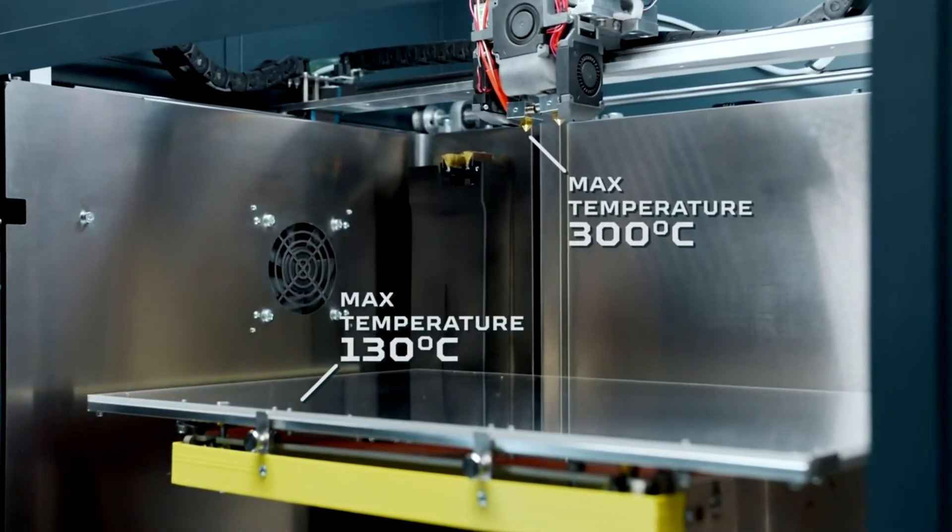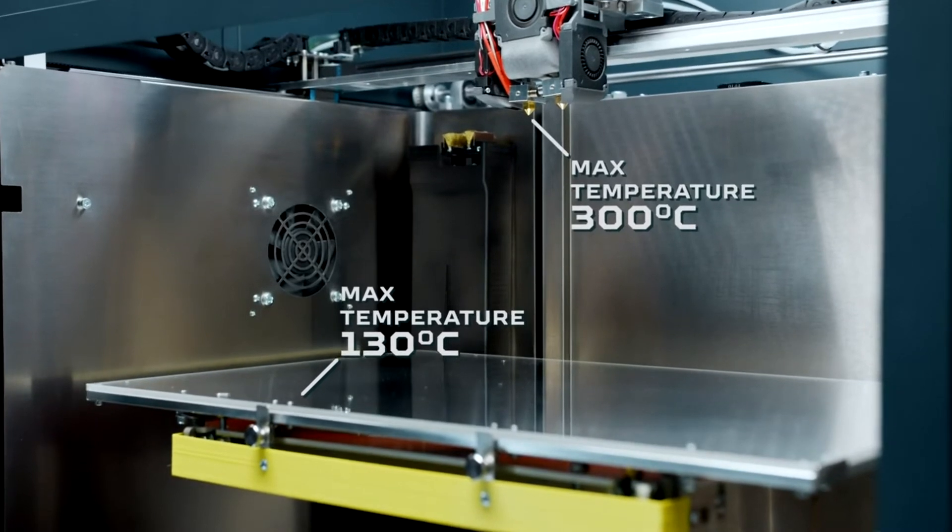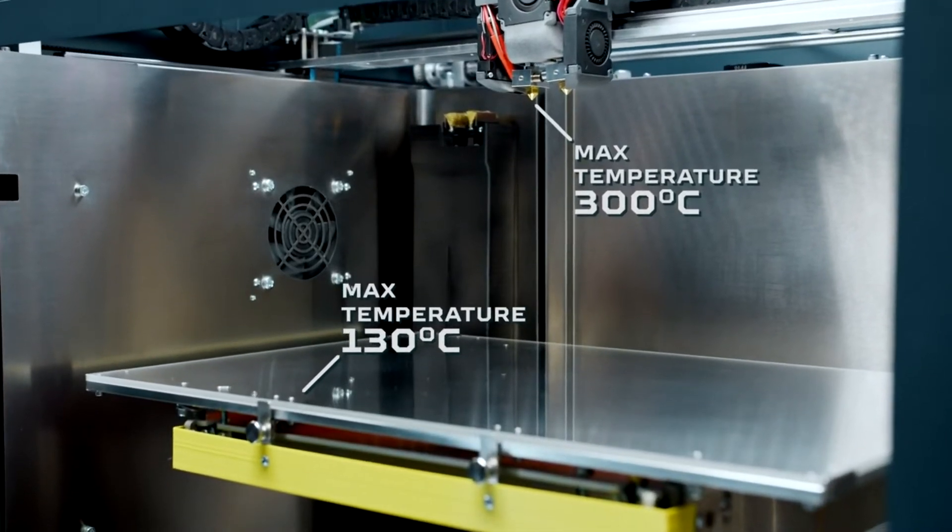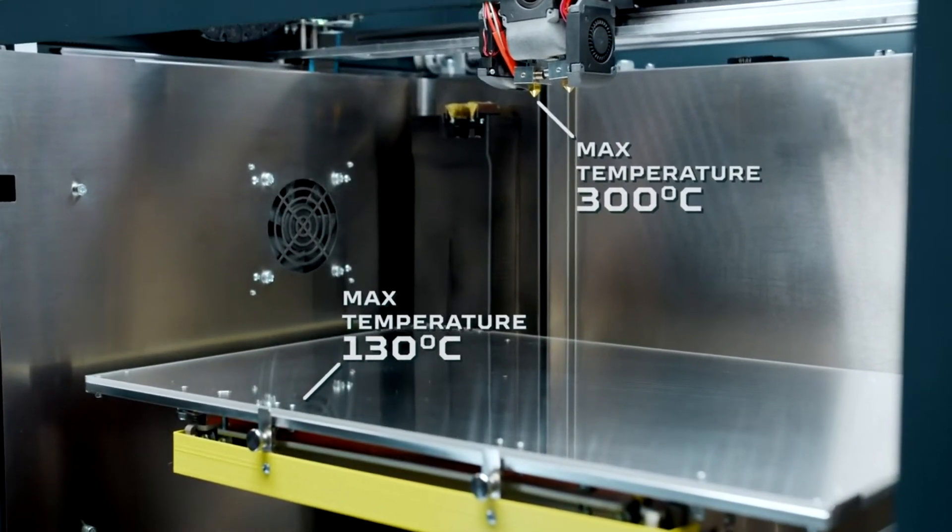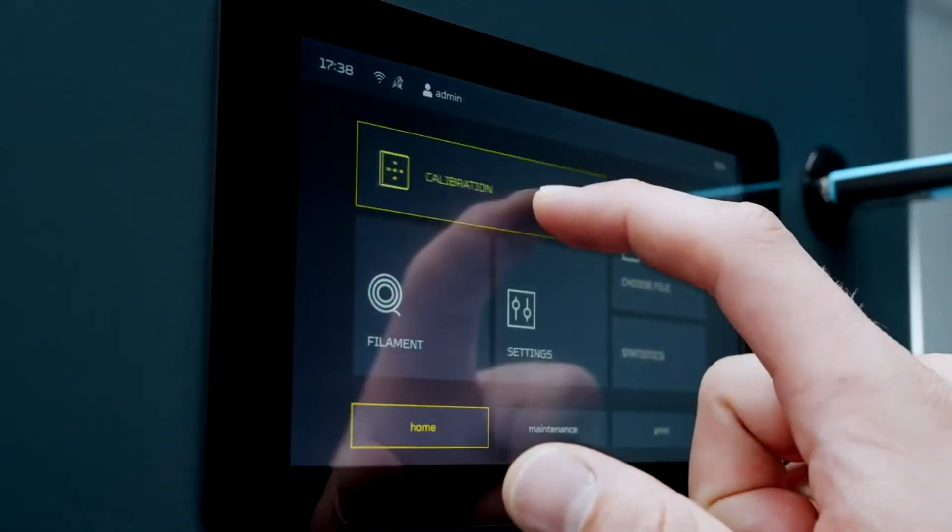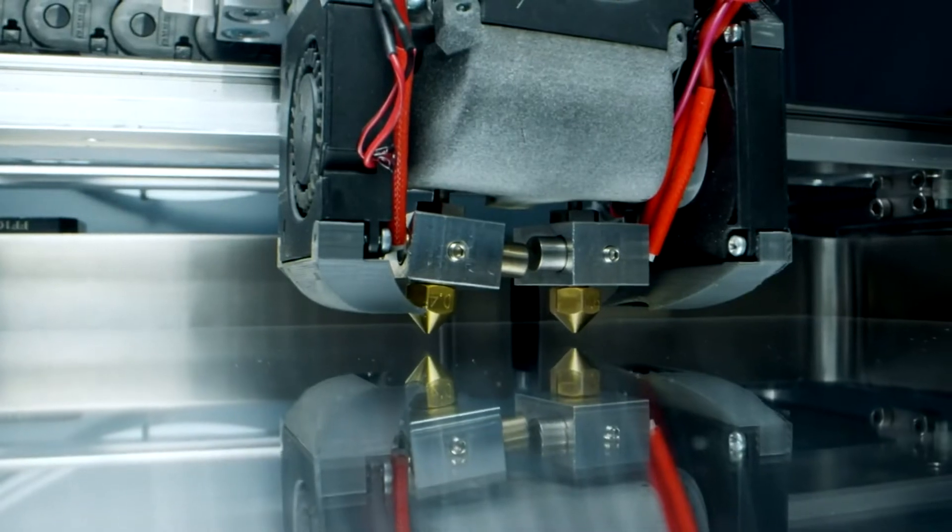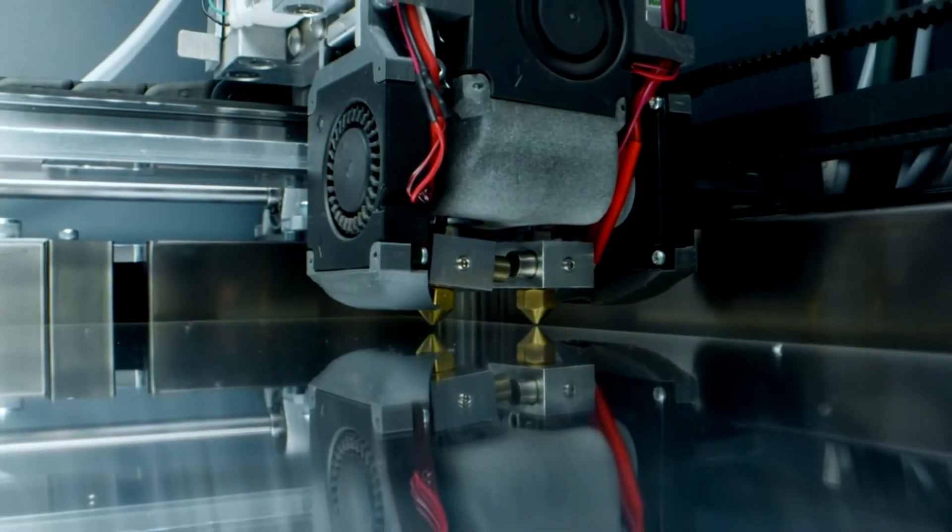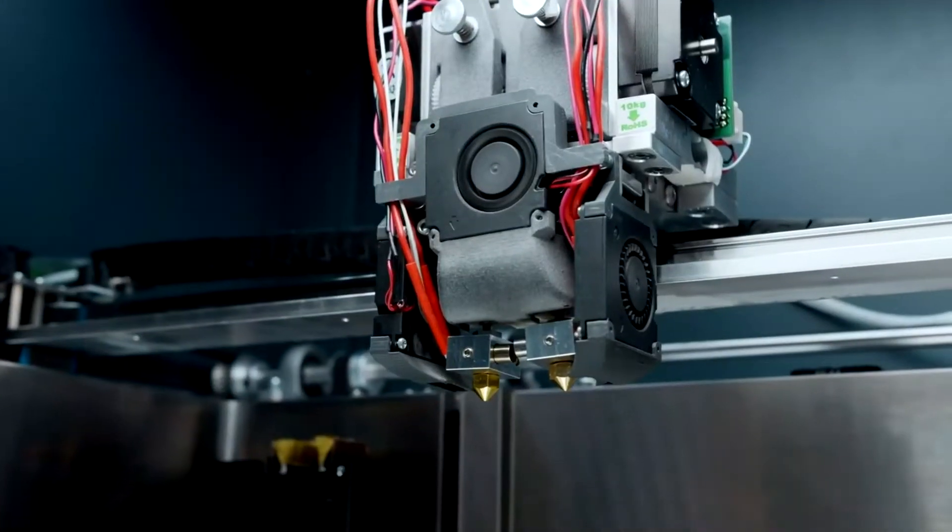800 watt heater mounted on the table distributes the heat evenly and allows temperatures to 130 degrees Celsius. An intuitive calibration process takes care of bed leveling, ensuring the best first layer adhesion and overall quality of the print.